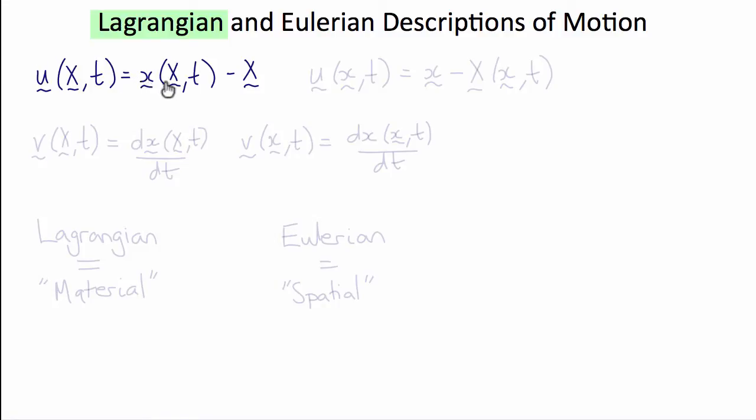Expanding that, we get little x of big X and t minus big X. We call this a material or Lagrangian position, where big X represents the original point of a particle, because all particles in the system only have one original point. By writing things as a function of its original position, you're following the particle.